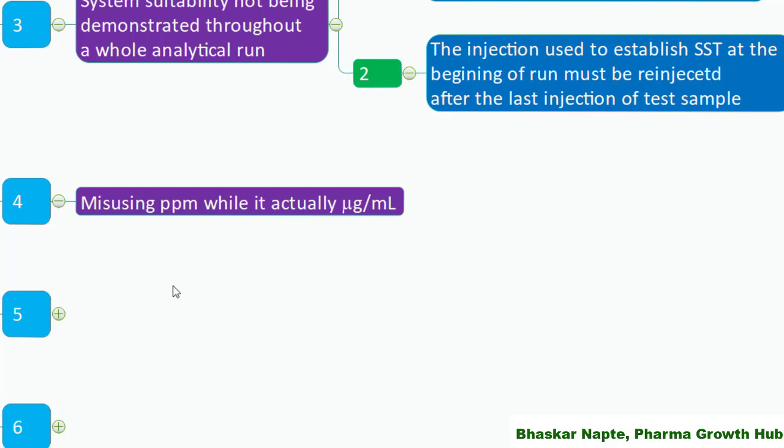Misusing ppm when it actually means microgram per mL — it is very habitual to use ppm as a synonym for microgram per mL, but these two are two different units. Rather than using ppm, you must start using microgram per mL. After understanding this common error, one should change this habit and start using microgram per mL rather than ppm.